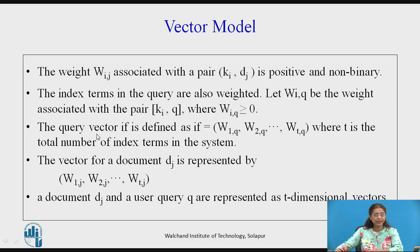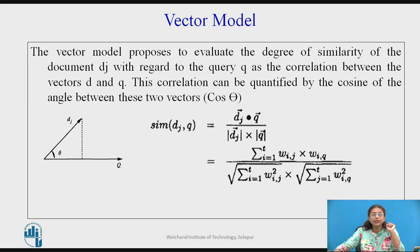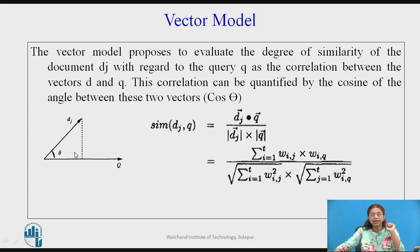We have obtained two vectors: one is the document Dj vector and the second one is the user query vector in t-dimensional space. The vector model proposes to evaluate the degree of similarity of document Dj and query q as the correlation between these two vectors. This correlation is given by the cosine of theta, where theta is the angle between these two vectors.